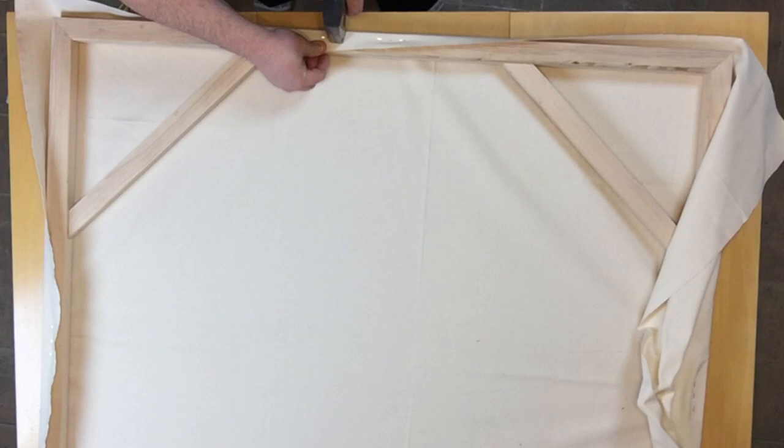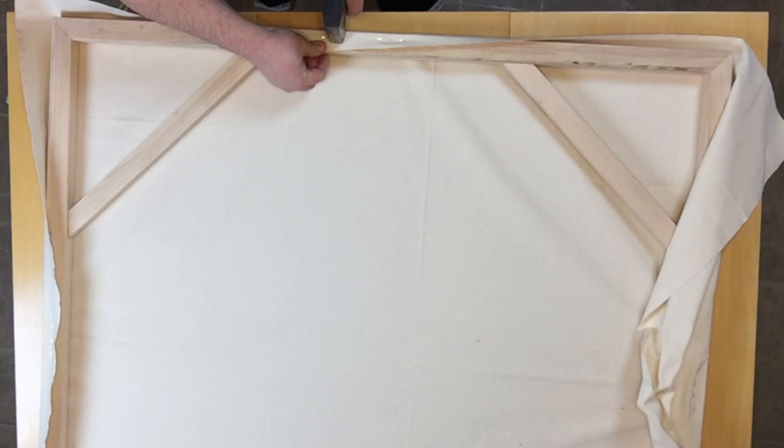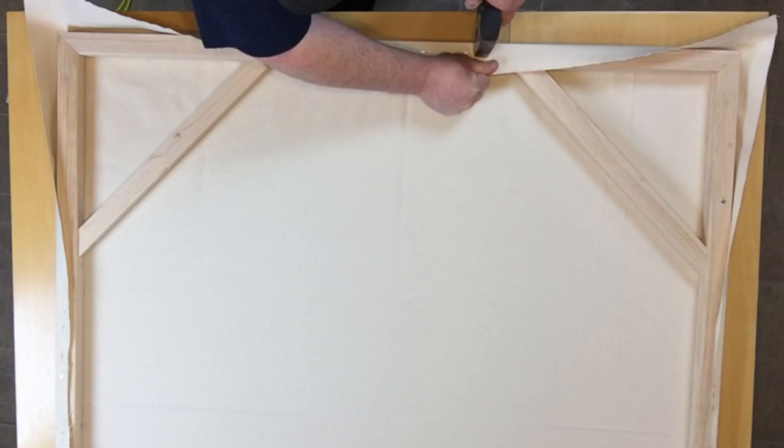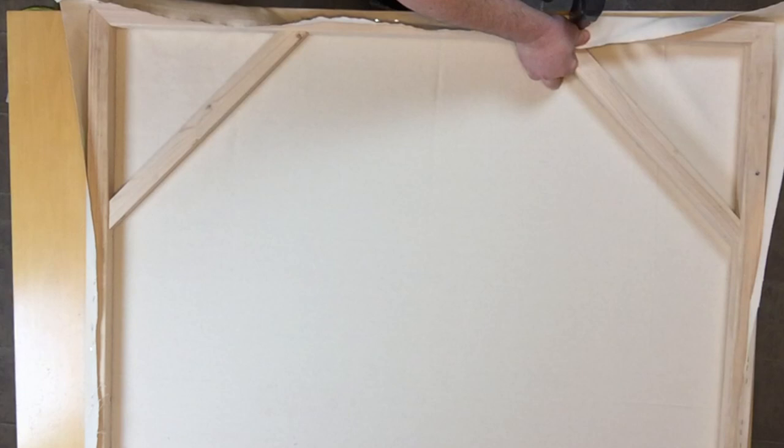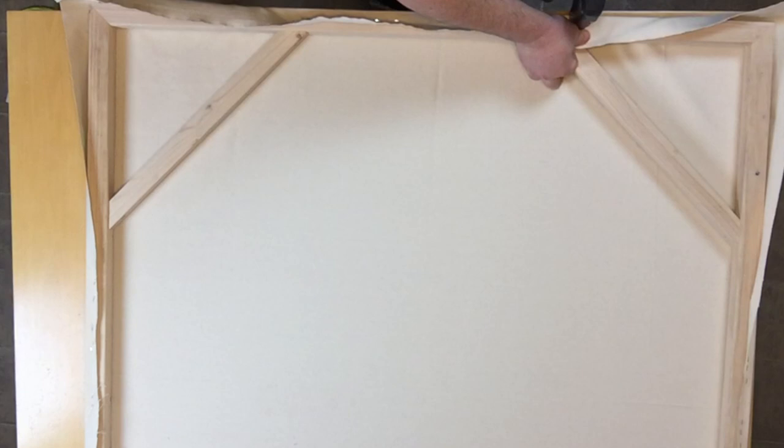I work my way out. Every time I pull, I'm removing a wrinkle and then adding a wrinkle in the other direction. I just work myself closer and closer to the corners. Making sure to pull the canvas nice and tight, I have all the wrinkles removed. I also like to come back with a tack hammer and make sure all the staples are nice and flush.